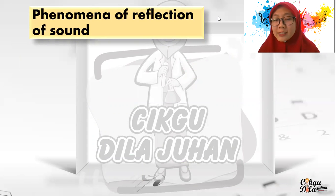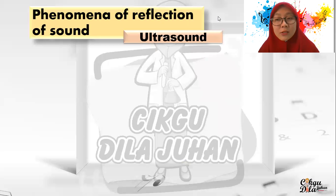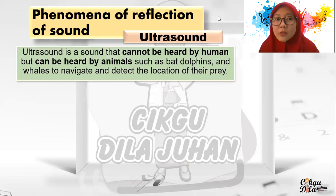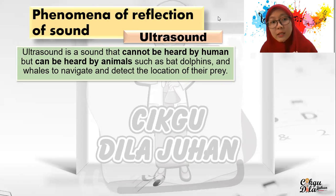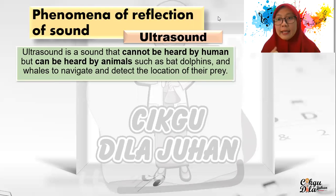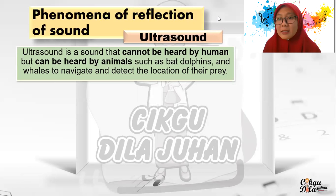Next, the second phenomenon of reflection of sound is ultrasound. What is ultrasound? Ultrasound is a sound that cannot be heard by humans, but can be heard by animals such as bats, dolphins, and whales, to navigate and detect the locations of their prey. We as humans cannot hear ultrasound, but animals can. That's how they detect and navigate to find their food.